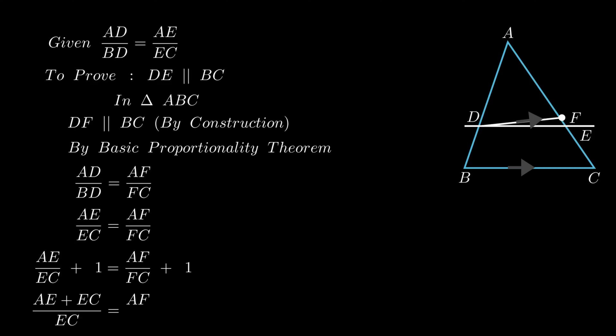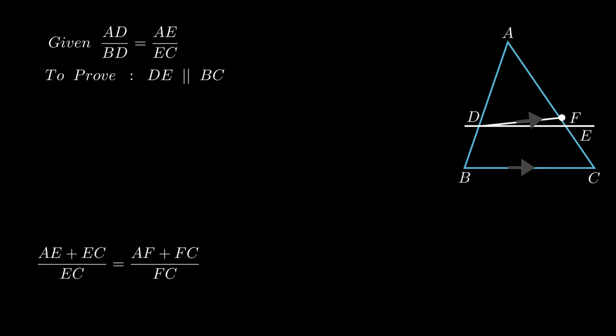By taking the LCM this equation is simplified as AE plus EC upon EC equals AF plus FC upon FC. On simplifying AC with AC the equation is reduced to 1 upon EC equals 1 upon FC.